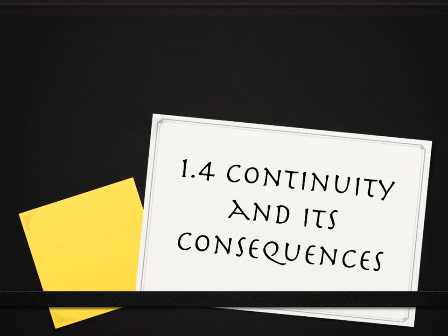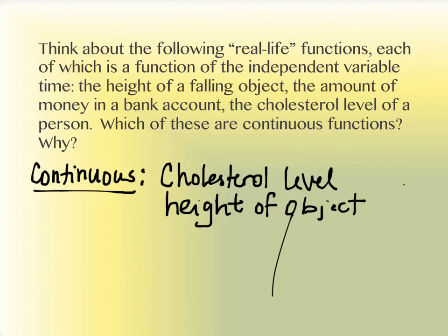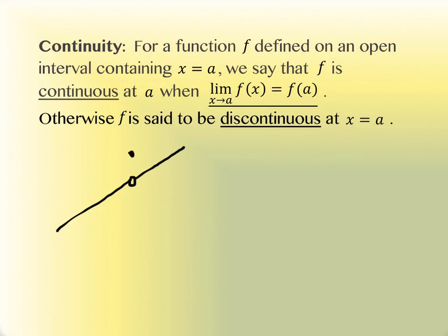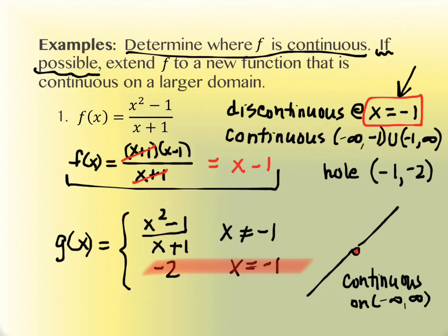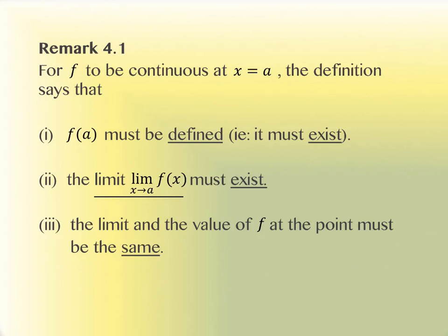Just as a quick refresher as to where we were last time, we had talked about what continuity was. We encountered a definition about continuity, and then we got to this remark that parsed out what the definition was telling us — it was telling us three things: the function value exists, the limit value exists, and those two pieces of information are the same.